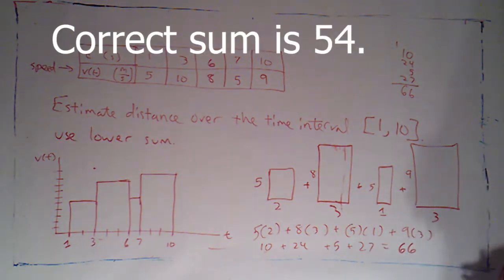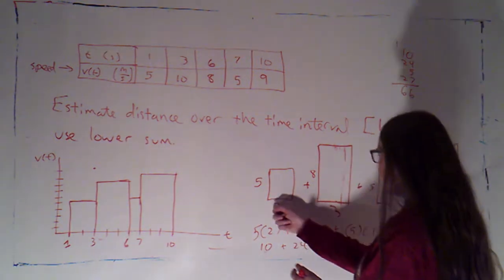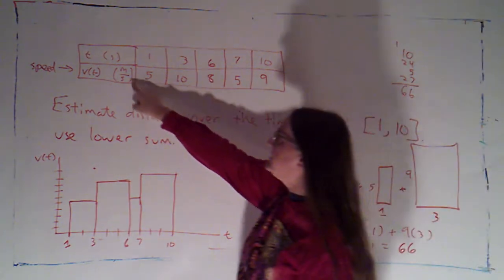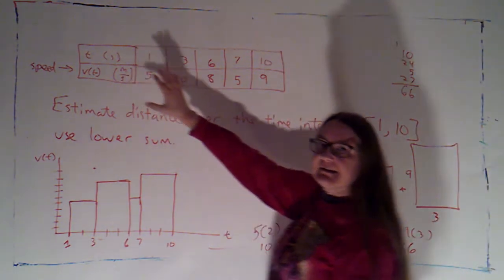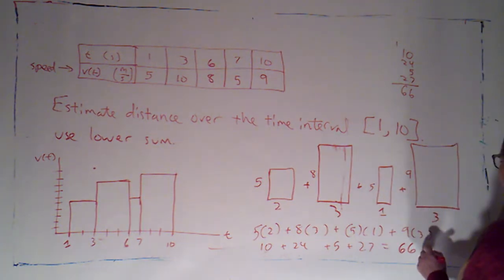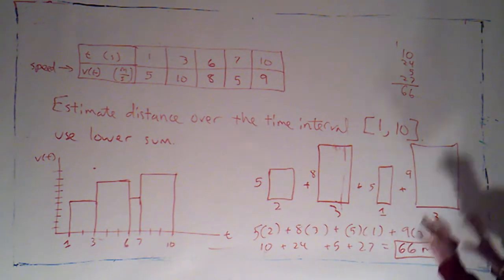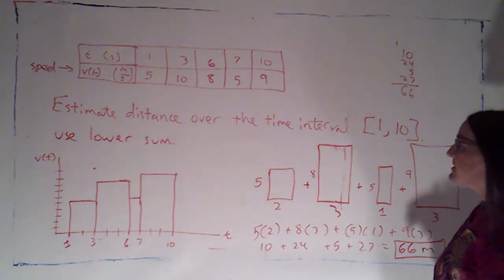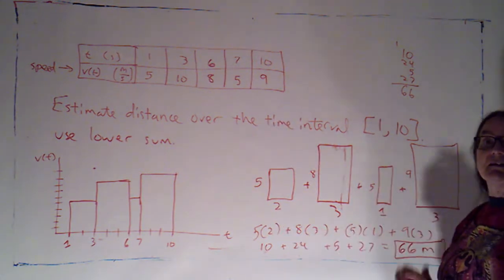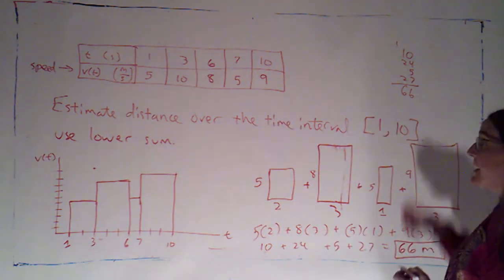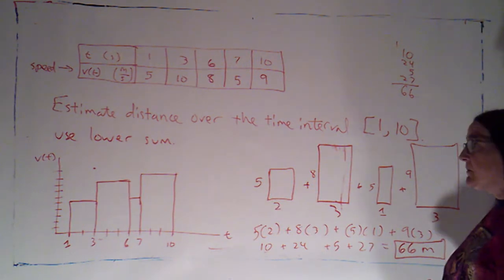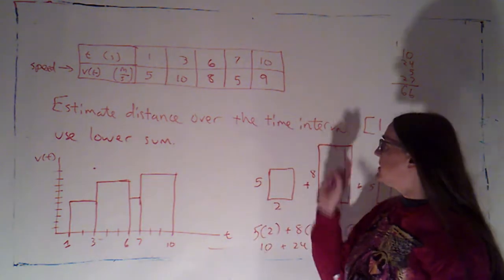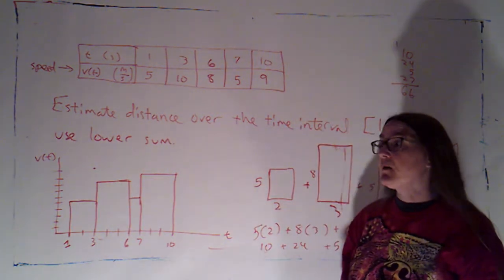So this would be 66 and let's see what the units would be. These bases were all time which we were measuring in seconds. These heights were all speeds in meters per second. Seconds times meters per second is going to give me meters. So we would estimate, although we know it's an underestimate, that this particle moved 66 meters over the time interval from 1 to 10. Now, I was told that was my time interval. If I hadn't been told that I might have wondered whether I ought to extend this over to 0 and that was my starting time. So you did need to be told what your starting time was for this problem.